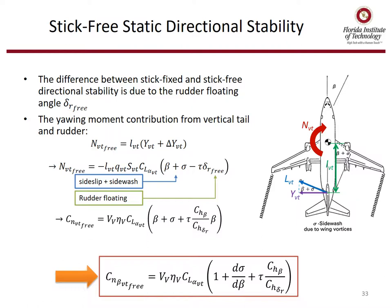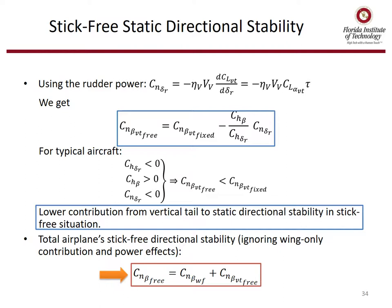The difference between stick-fixed and stick-free directional stability is due to the rudder floating angle delta-r free. The resulting equation for C_n beta of the vertical tail free includes V_V, eta_V, the lift curve slope of the vertical tail, times the quantity 1 plus d-sigma over d-beta plus tau times C_h beta over C_h delta-r. C_n beta of the vertical tail free is less than C_n beta of the vertical tail fixed. The total airplane stick-free directional stability, ignoring wing-only contribution and power effects, is given by the equation combining wing-fuselage and free vertical tail contributions.